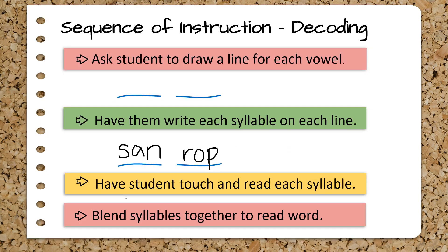Then ask the student to draw a line for each vowel they identified. Direct them to write each syllable on a line. Students will then touch and read each syllable back to you. Finally, have the student blend the syllables together to read the word again fluently.